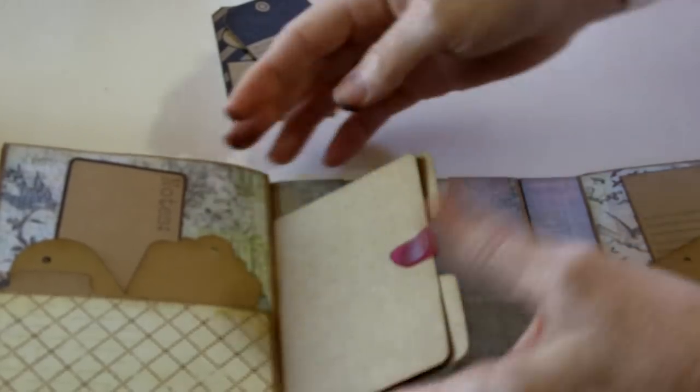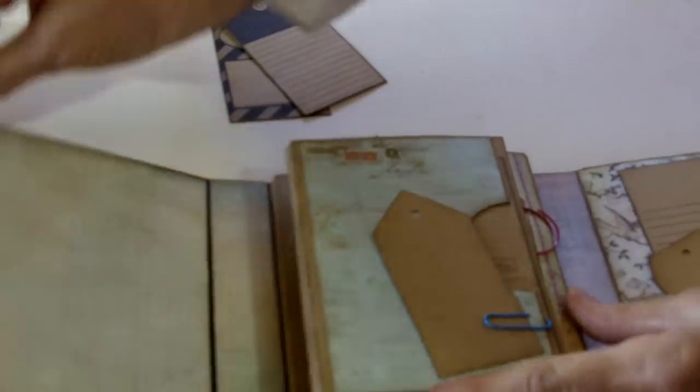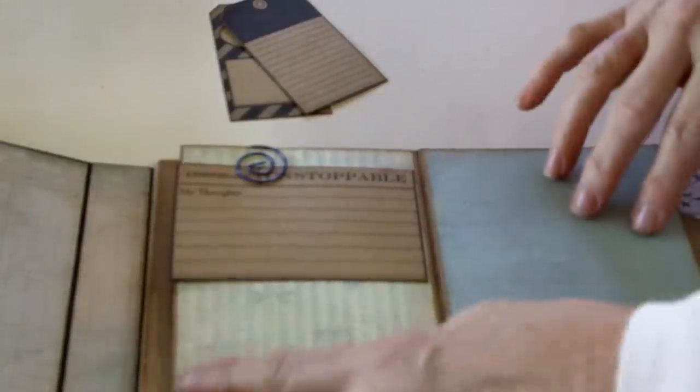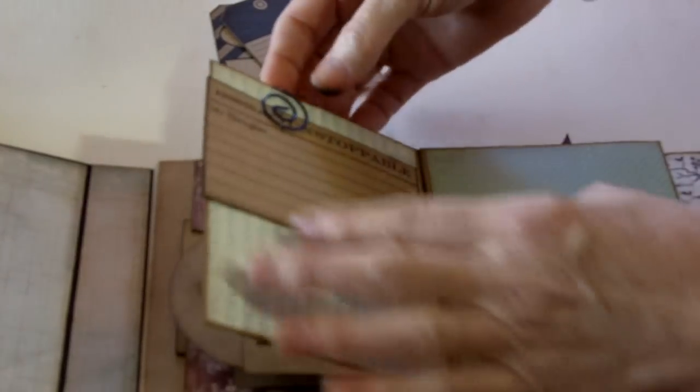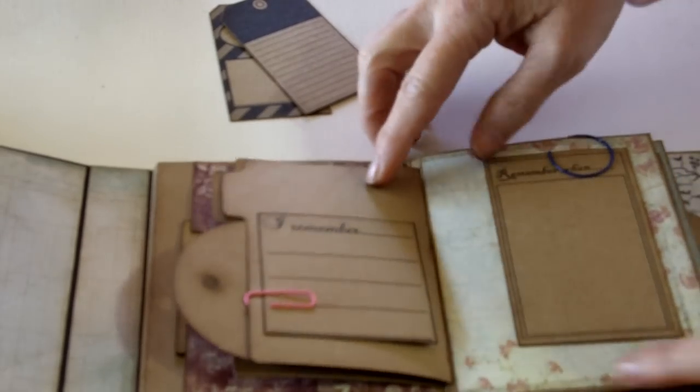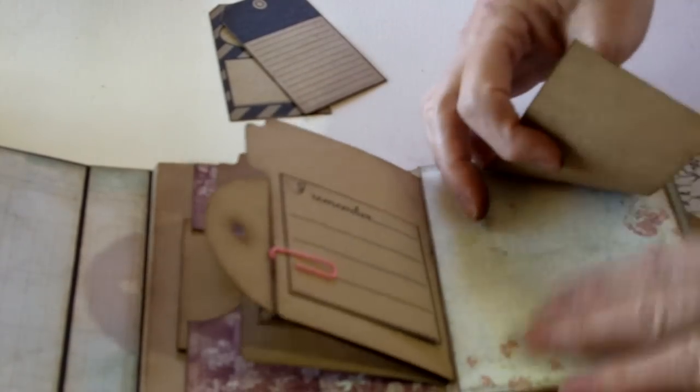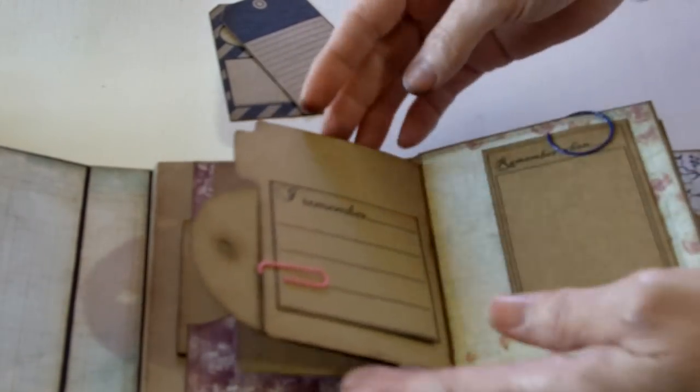When this closes back this way, then this section of the book opens like this, reveals some more nice-size pages for photos. Other things could be added to the pages. This one has a clippy with a journaling spot. This opens up—same thing—nice big photo page opportunity there.